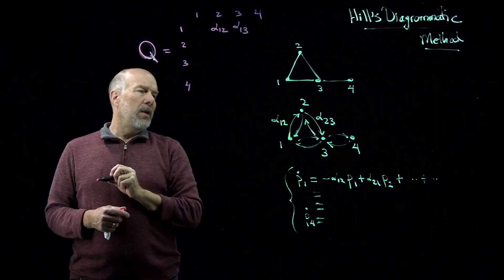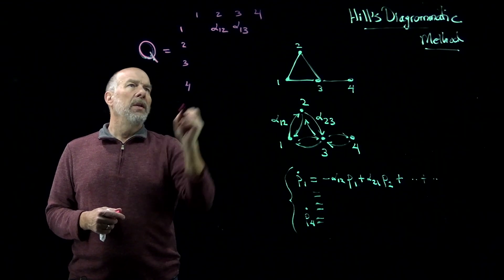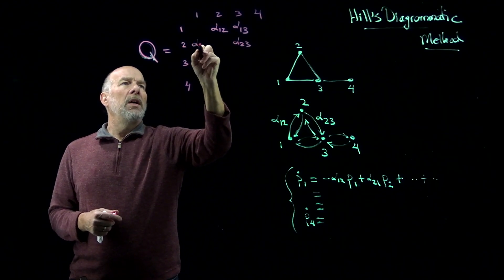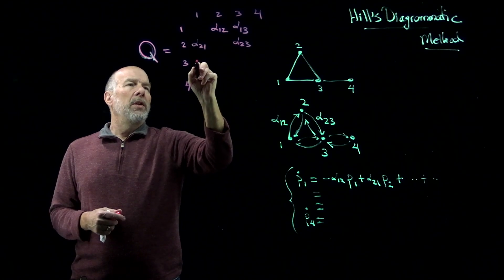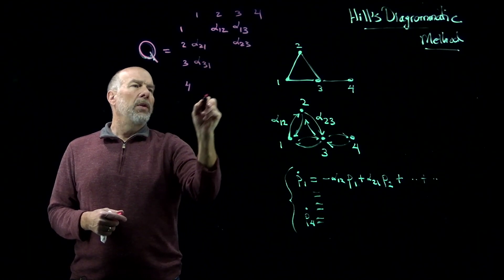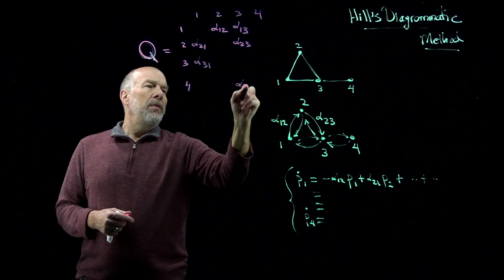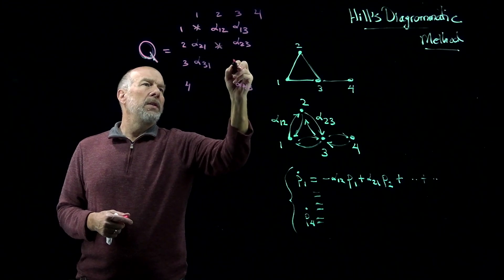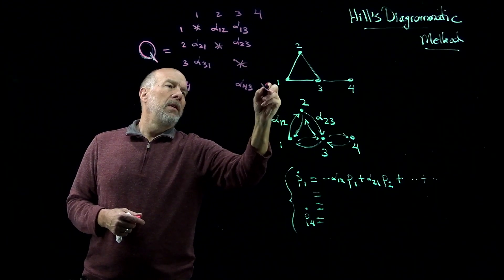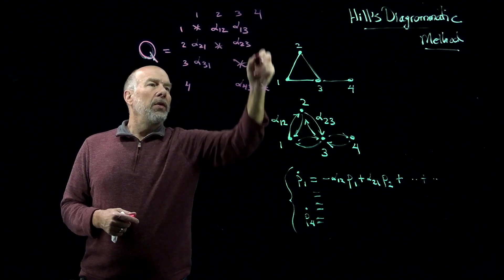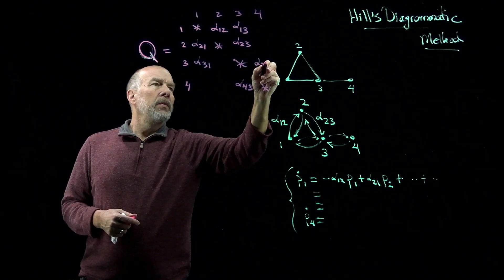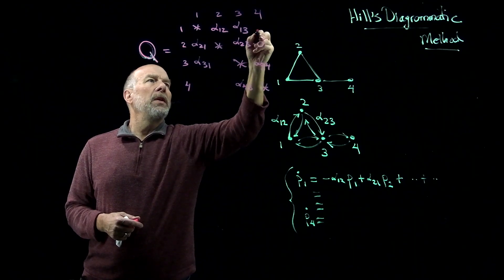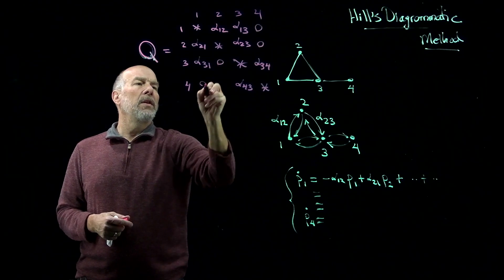So 2 can go to 3. So this is alpha 2,3. 2 can go back to 1. Alpha 2,1. 3 can go to 1. Alpha 3,1. 4 can go to 3. Alpha 4,3. I'm going to put stars here in this diagonal to explain. I'll explain what that means in a second. 4 can only go to 3. Sorry, 3 can only go to 4. Alpha 3,4. There's big fat zeros here, here, and here.